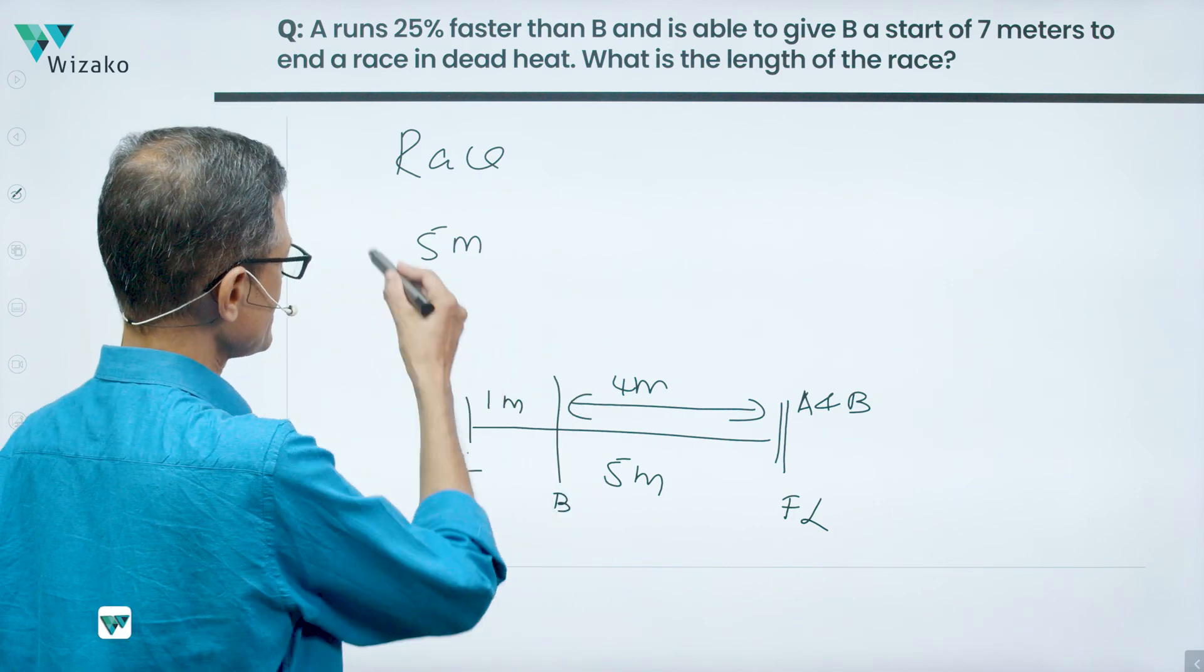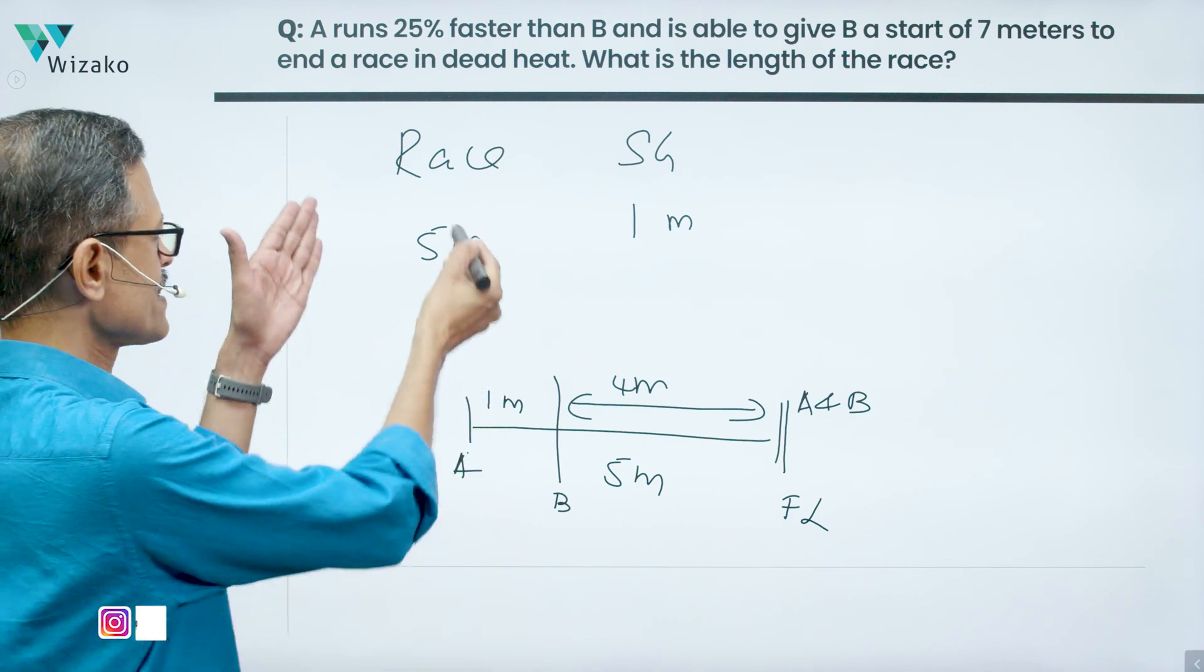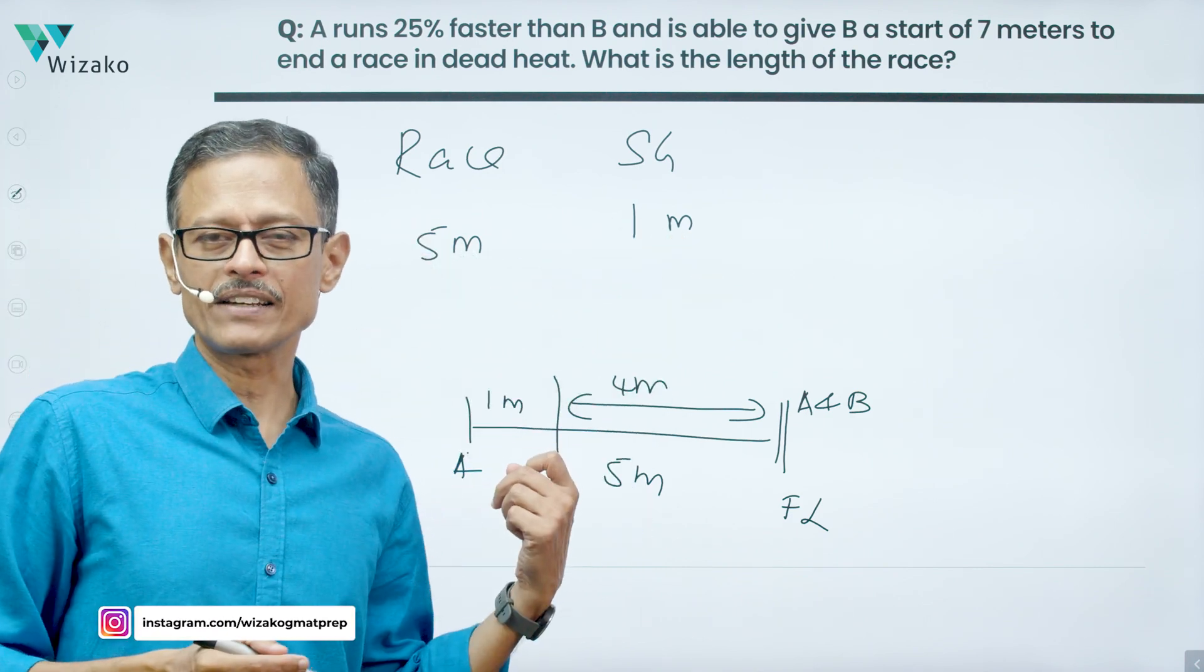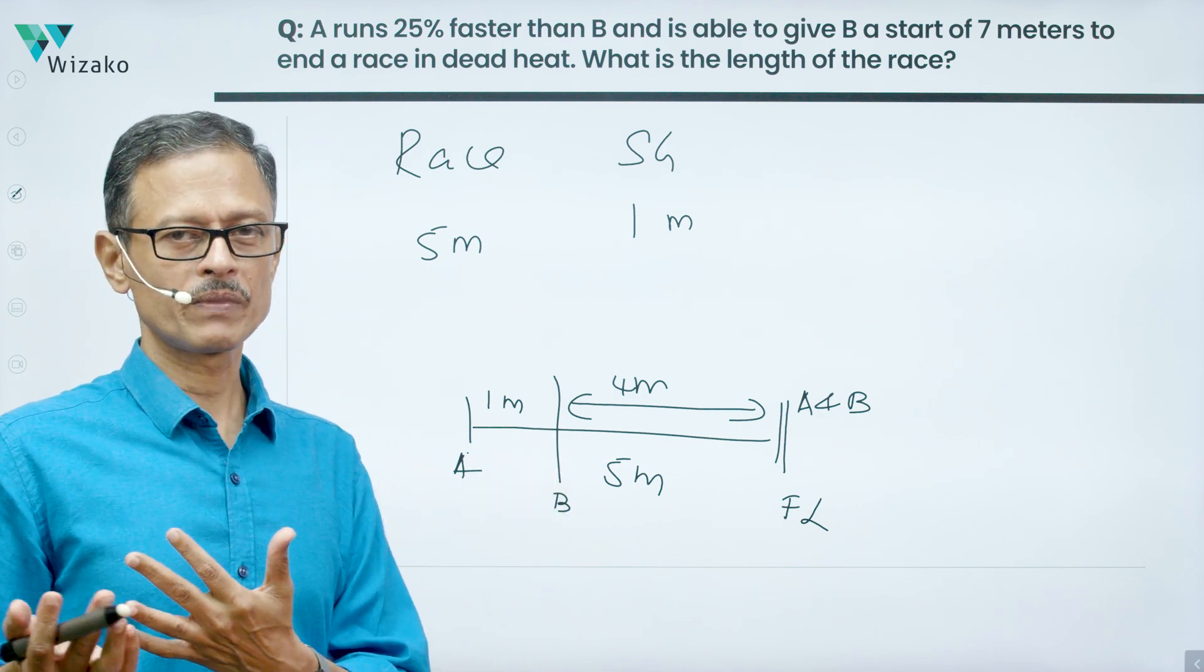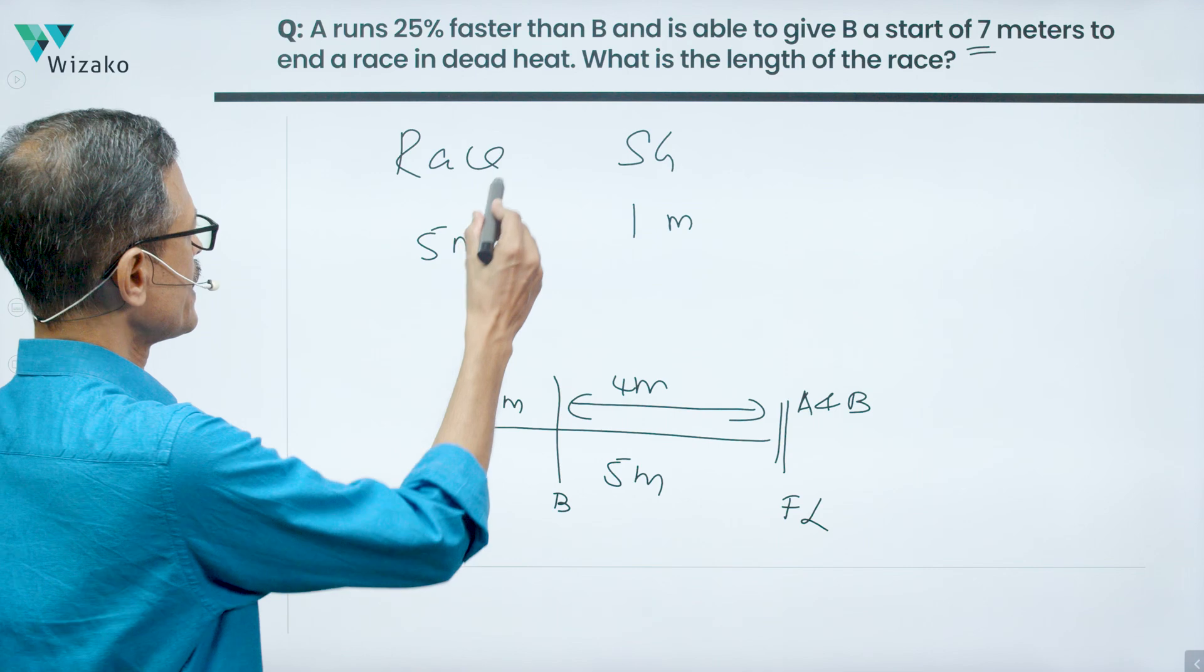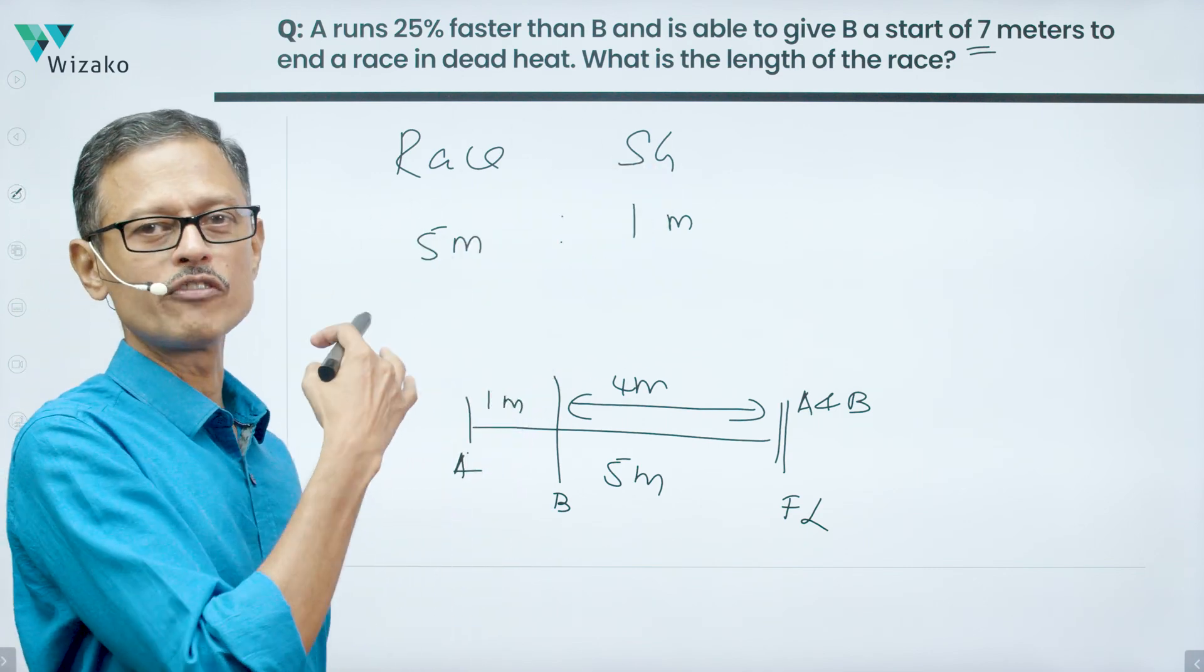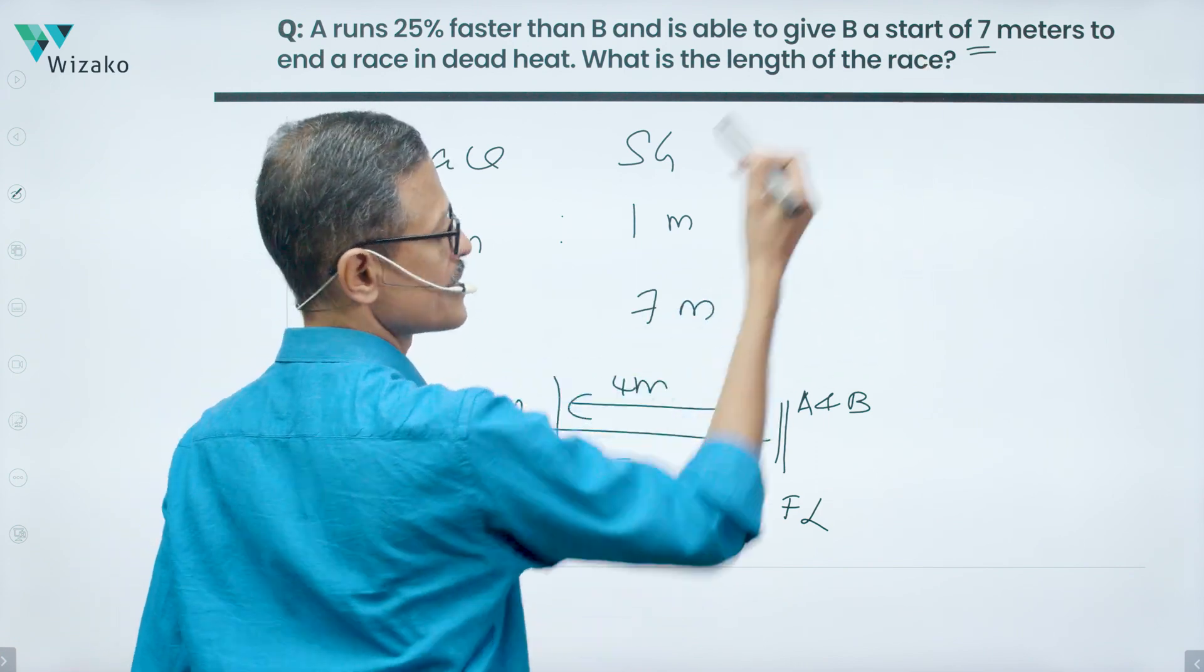If the race length is 5 meters, the start given is 1 meter. If the race length is 50 meters, start given will be 10 meters. The race length is 500 meters, start given will be 100 meters, and so on. What is given to us: the start given is equal to 7 meters.